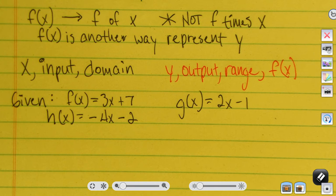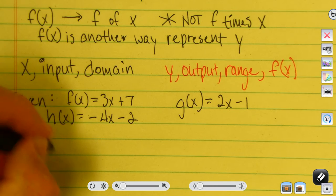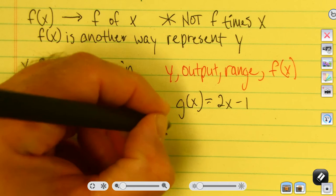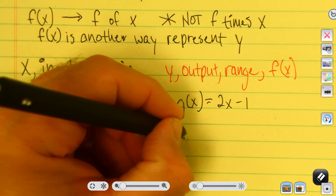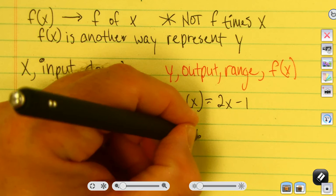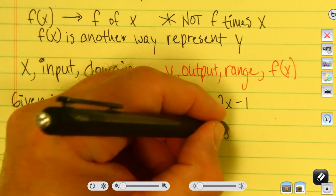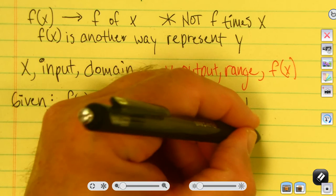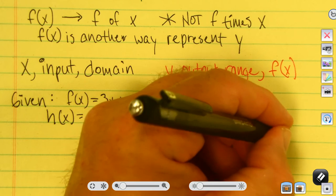We'll give you another function — this one is h of x, and it's equal to negative 4x minus 2. And one additional function I'll write a little differently: I'll call it a, and I'll give you coordinates, which are discrete or disconnected points: (5, 6), (1, 5), (3, 2), and (negative 1, 4).